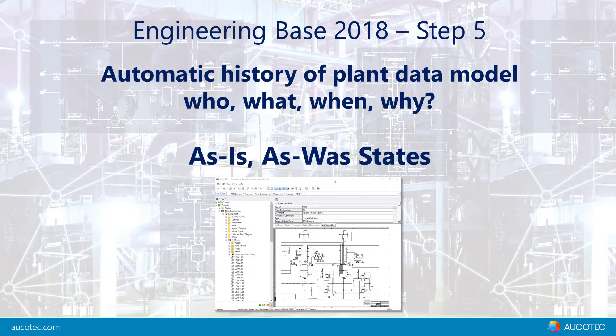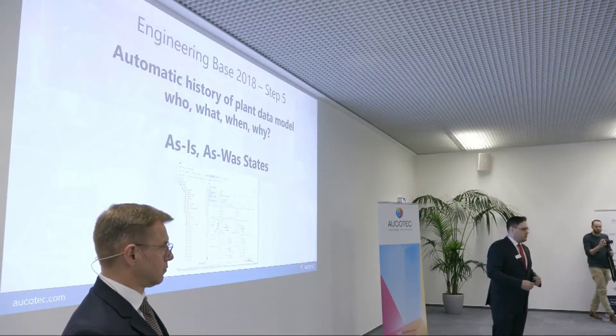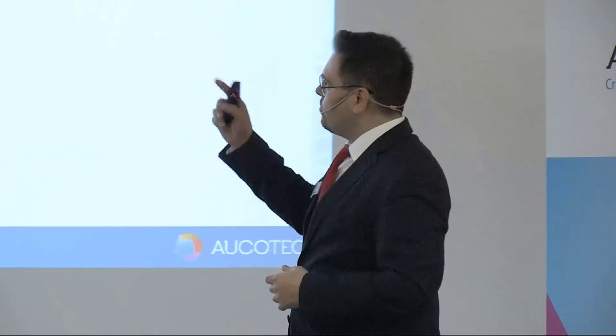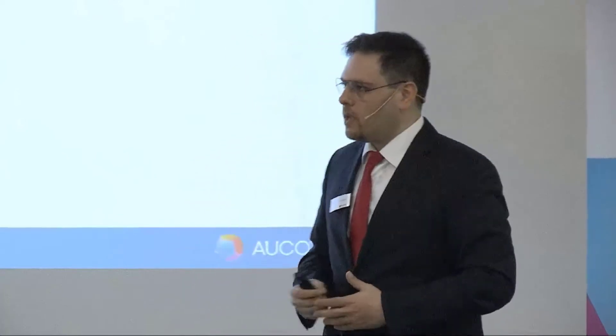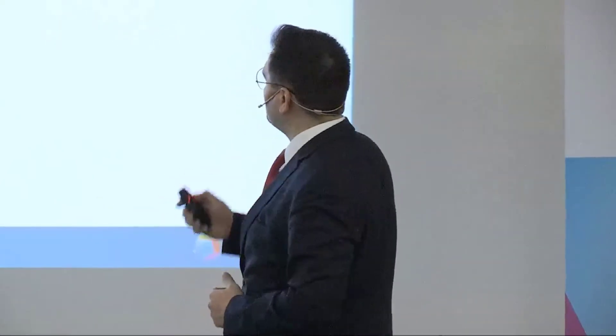Step five is automatic tracking of history for the plant digital model. At any point in time, as an owner operator or EPC, you can go back to the data model and ask what the status was last April or last June. We have as-is, as-built, and now we created 'as-was' status — so engineers and managers can see what the as-was status of their plant was at any given time, with full history tracked on each object.